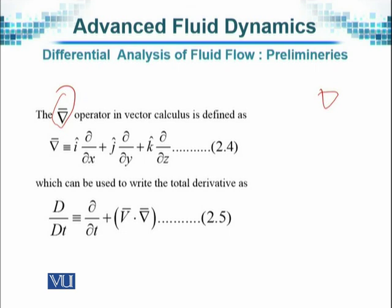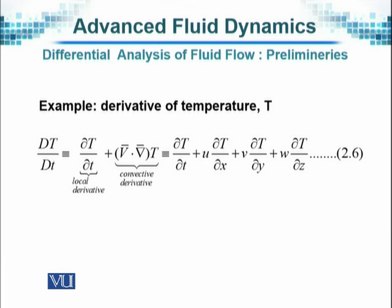In a shorter form, the total derivative d by dt is equal to the partial derivative with respect to time plus the velocity vector v times del. Using this, we can write down the equation we obtain — for example, the derivative of temperature.